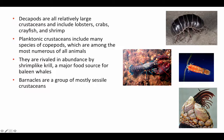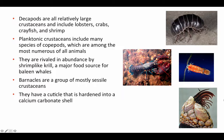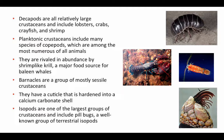Barnacles are a group of mostly sessile crustaceans whose appendages are modified for filter feeding. They have a cuticle hardened into a calcium carbonate shell that surrounds most of their body. They produce an adhesive that is an extremely strong glue — companies with ships struggle constantly with removing barnacles from their hulls. Interestingly, barnacles are also notable for having the longest penises relative to body size of any animal.